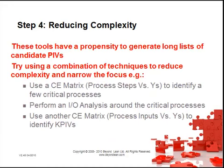When looking at reducing complexity, these tools have a propensity to generate long lists of candidate process input variables. Try using a combination of techniques to reduce complexity and narrow the focus. For example, use a cause and effect matrix to identify a few critical processes, perform an input-output analysis around those critical processes, and use another cause and effect matrix to identify KPIVs.